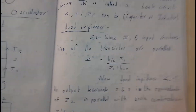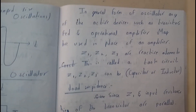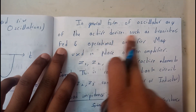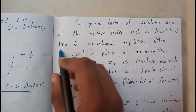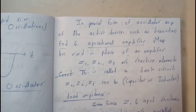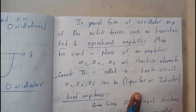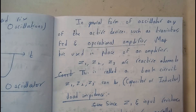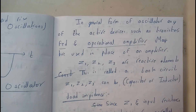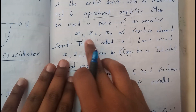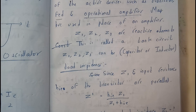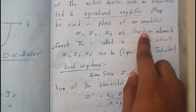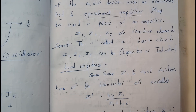Now let us go through the theoretical part and the derivation. In the general form of the oscillator, any active device such as a transistor, FET, or operational amplifier may be used in place of that amplifier, which gives 180 degrees phase shift. In place of Z1, Z2, Z3, we will be using reactive elements — that is, capacitors or inductors. The lower part of the diagram we call the tank circuit. Now the derivation starts.